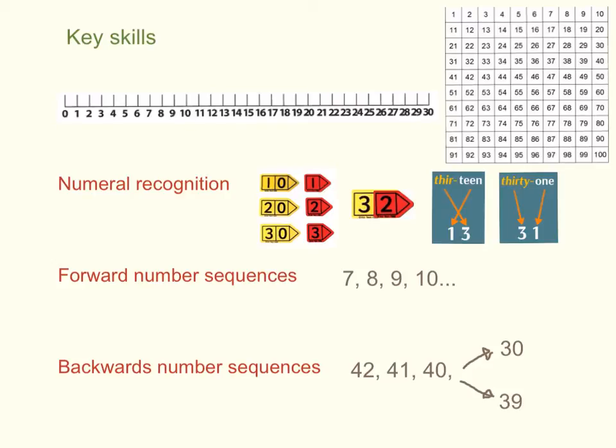We always use visual models to teach these key skills, making sure they're well selected to the task. For example, a hundred square is great for counting up and down in tens, whereas a number line is a more effective support to a child that needs help in counting down over a tens boundary.